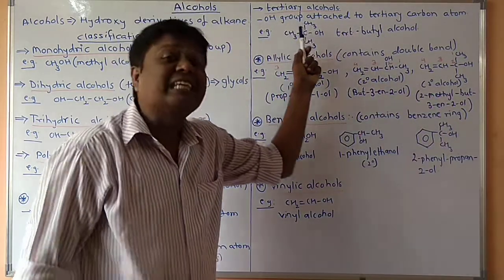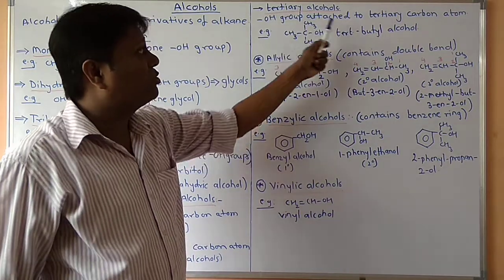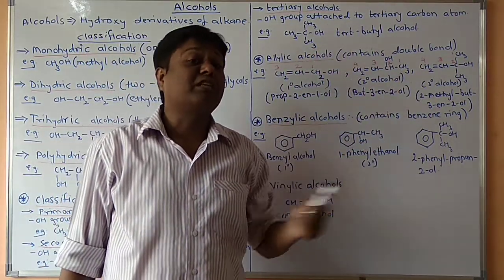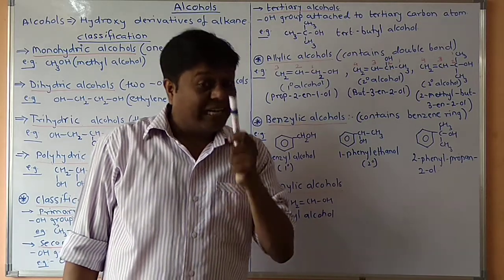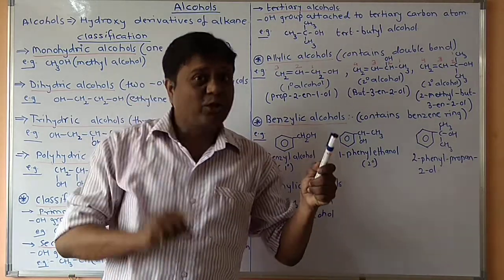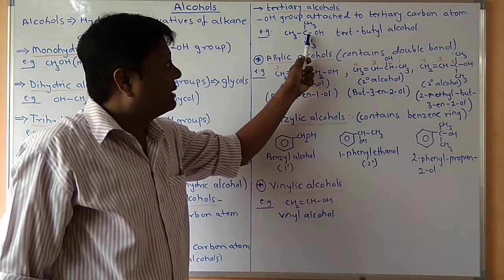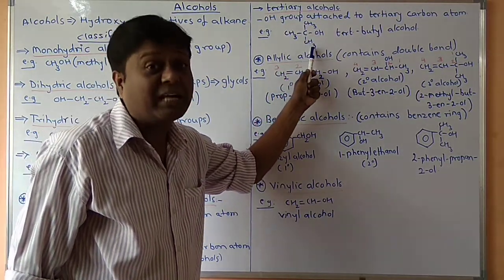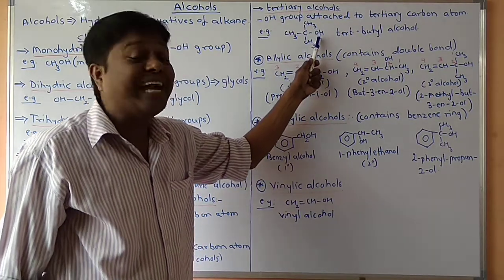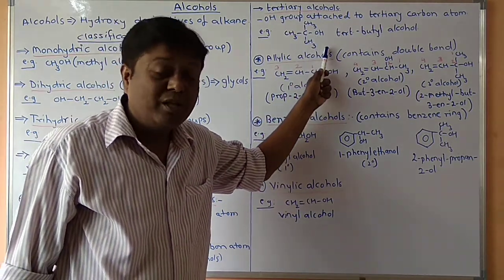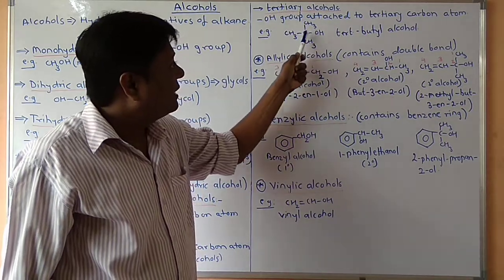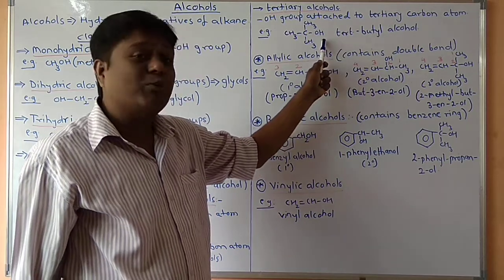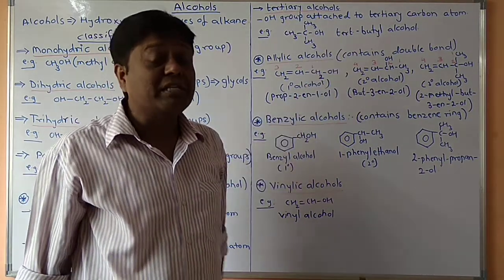Tertiary alcohols: the hydroxy group is attached to a tertiary carbon atom. The tertiary carbon atom is the central carbon that has three CH3 groups attached to it. That is the tertiary carbon atom. With the hydroxy group also attached, making four total bonds, this gives us tertiary butyl alcohol.